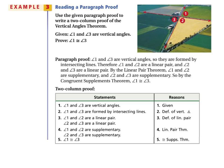In example three, we are given a paragraph proof and we want to write the two-column proof from it. Given: angle one and angle three are vertical angles. Prove: angle one and angle three are congruent. The paragraph proof states angle one and angle three are vertical angles — that's the given. They are formed by intersecting lines, which is step two, justified by definition of vertical angles.